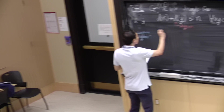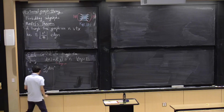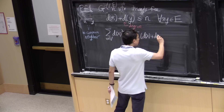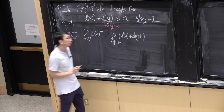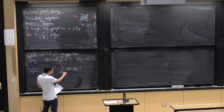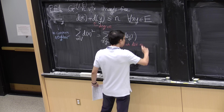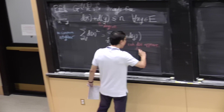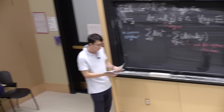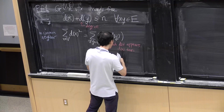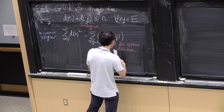Now let me consider the quantity which is the sum of the squared degrees. On one hand, I claim that the sum equals this quantity where I sum over all edges. The reason is: each d(x) appears once for each edge x is in, so it appears exactly d(x) times. But we saw that each sum is at most n, so this sum is at most mn.